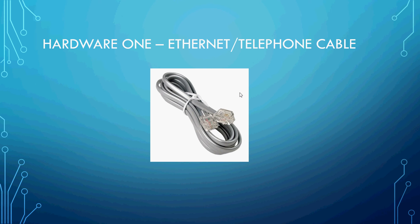First of all, hardware number one. This is a piece of cable or wire that connects to a wall socket and connects back to your computer. This basically allows data to be transferred through zeros and ones from your computer to the rest of the internet. This is the wired method of connecting to the internet, so this is an integral part of that.